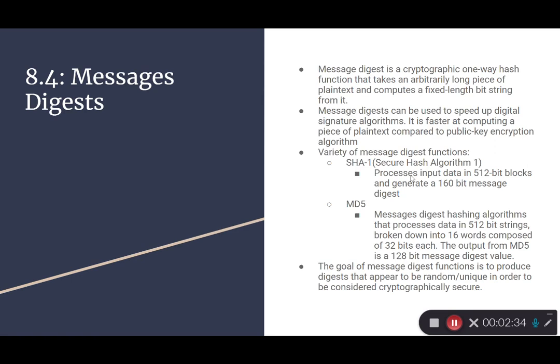Priority of Message Digest functions are Secure Hash Algorithm 1 and MD5. For Secure Hash Algorithm 1, it processes input data in 512-bit blocks and generates a 160-bit Message Digest.